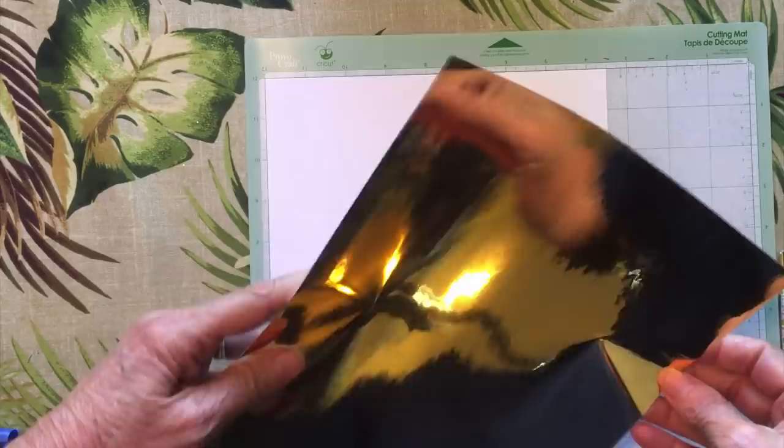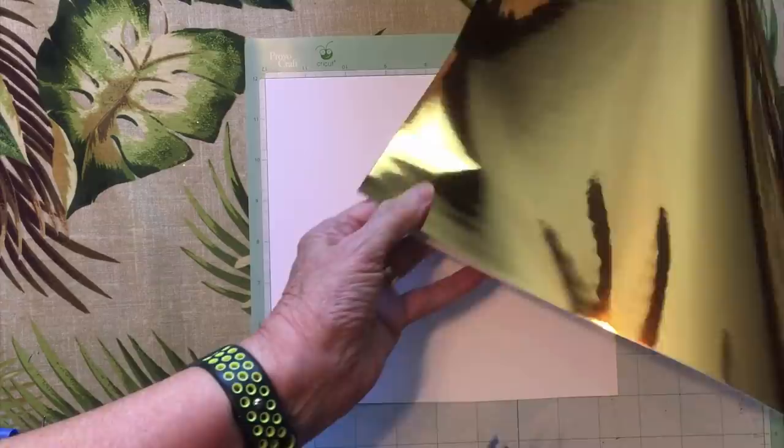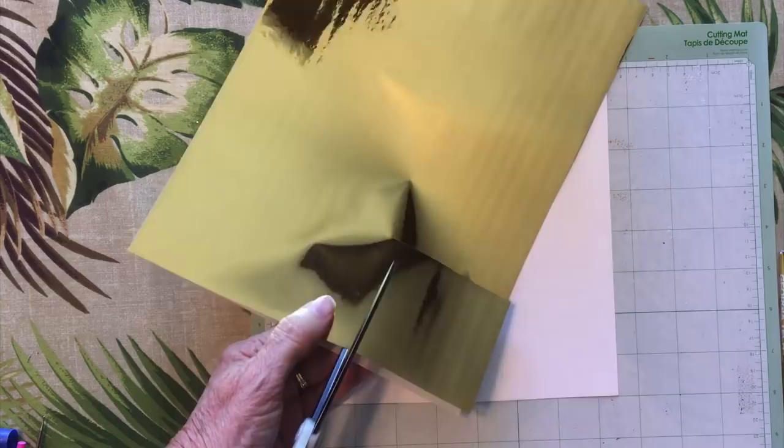To use it, you separate it from its liner and cut it to the size you need. It's not like other foils you're familiar with. It's not as flimsy or hard to handle, and it only needs pressure to work. That's right, no toner, no glue, no powder, no heat, just pressure.